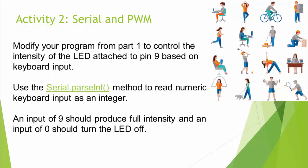Next, if you haven't already developed the ability to pull from the serial monitor, go ahead and use keyboard input to pull an integer value, and translate that into your pulse width modulation intensity level. If the user inputs a 0, turn the LED off. If the user inputs a 9, turn it to full intensity. You may find that capability useful in future sketches, at least for debugging purposes.